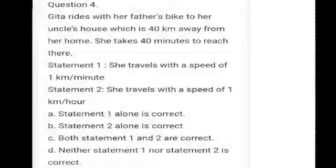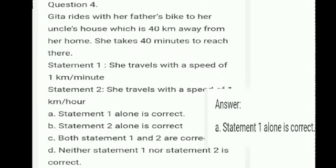Question number four: Githa rides her father's bike to her uncle's house, which is 40 kilometers away from her home. She takes 40 minutes to reach there. Statement one: she travels with the speed of one kilometer per minute. Statement two: she travels with the speed of one kilometer per hour. Answer: A, statement one is correct.